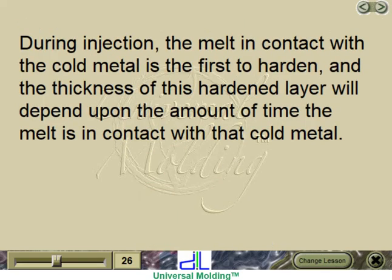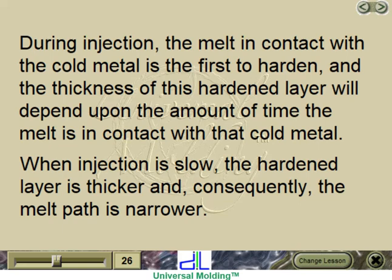During injection, the melt in contact with the cold metal is the first to harden, and the thickness of this hardened layer will depend upon the amount of time the melt is in contact with that cold metal. When injection is slow, the hardened layer is thicker and, consequently, the melt path is narrower.